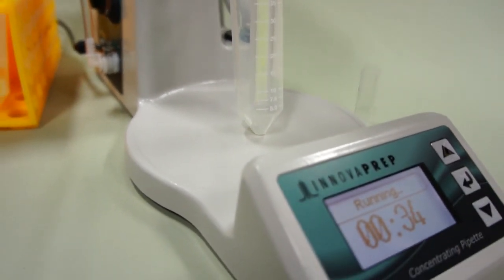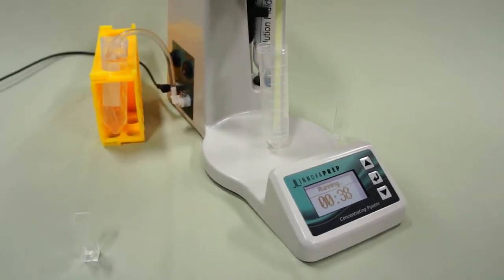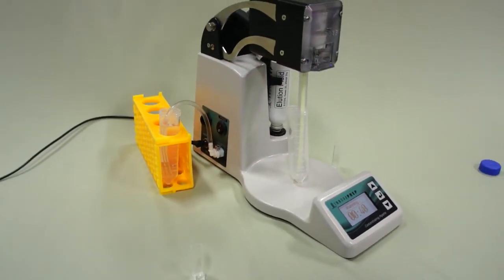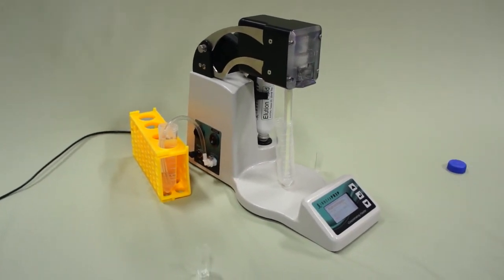In this example, the 45 milliliter sample is processed in 34 seconds, giving a processing rate of 80 milliliters per minute. An additional 5 to 10 seconds are required to finalize the run, then the particles are ready to be removed from the surface of the filter.